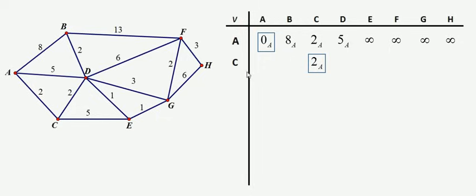And I'll mark over here that I'm considering vertex C now. And the next question is, can I get from C to B, D, E, F, G, or H with any shorter path than what I've got so far? Well, I can't go directly from C to B, so that 8 underneath the B column is unchanged.